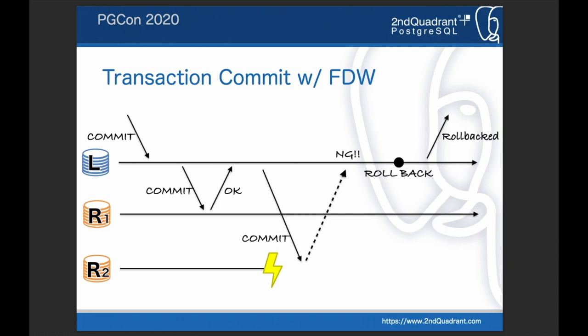Please note that data on the individual node can remain consistent even in this case, as long as we use a transactional database on the remote node. But from the global point of view, data is inconsistent if this kind of failure happens.